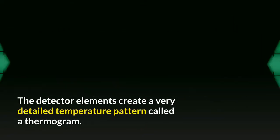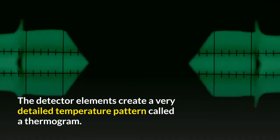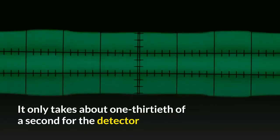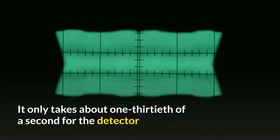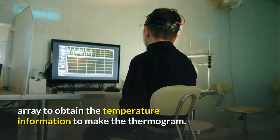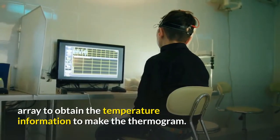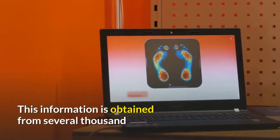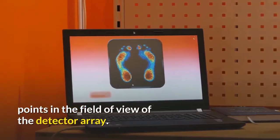The detector elements create a very detailed temperature pattern called a thermogram. It only takes about one-thirtieth of a second for the detector array to obtain the temperature information to make the thermogram. This information is obtained from several thousand points in the field of view of the detector array.